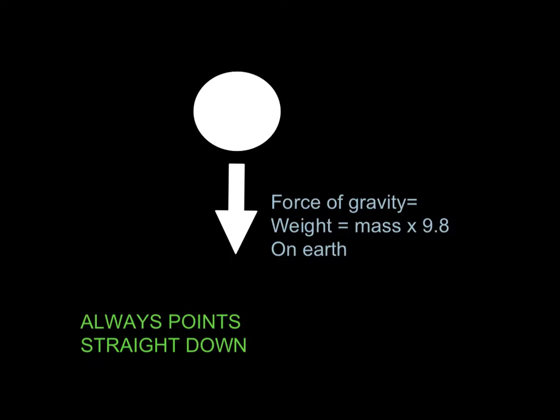We always have gravity, because we're on Earth most of the time. The force of gravity is our weight, and that's our mass times 9.8 if we're on Earth. Gravity always points straight down, and a lot of times we will label this FG — the force of gravity. Most of our forces begin with F, and then there's a subscript that identifies what type of force it is.